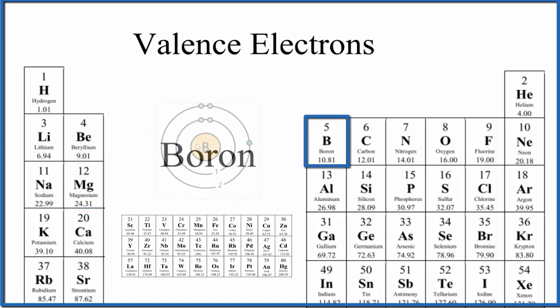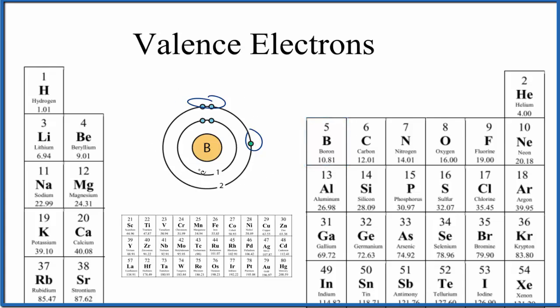What about boron? So boron, one, two, skip the transition metals, three, group 13, sometimes called 3a. Boron has three valence electrons, these electrons in the highest energy level.